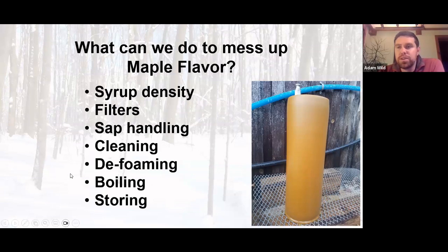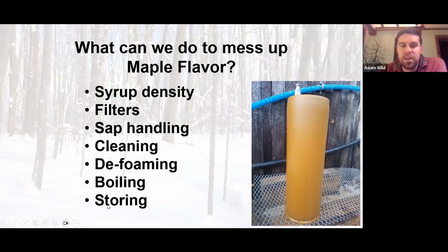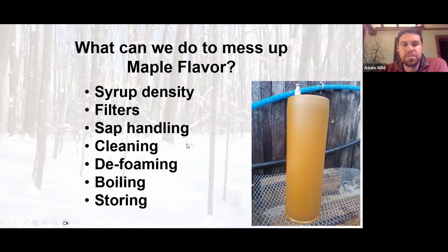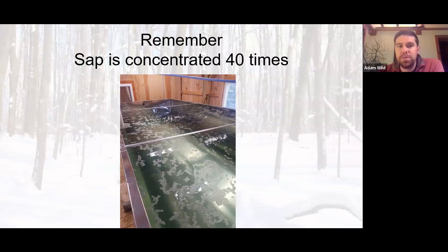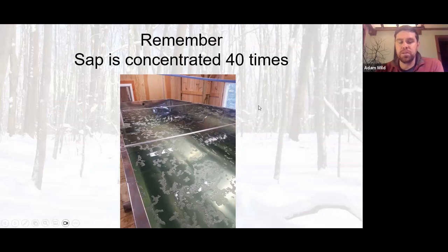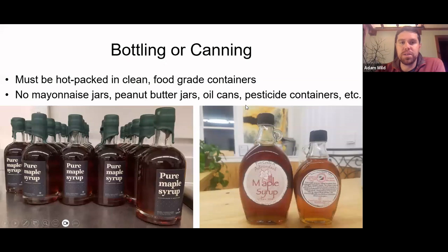Late in the season, very dark syrup can have a slightly scorched flavor anyway, but too intense heat makes it worse. Not storing at the correct density or not storing into hot containers is also an issue. The biggest thing to remember is that we're concentrating sap at least 40 times, so any slight off flavor in that sap gets intensified dramatically. It's really important to be careful in how you handle your sap to ensure good quality syrup.